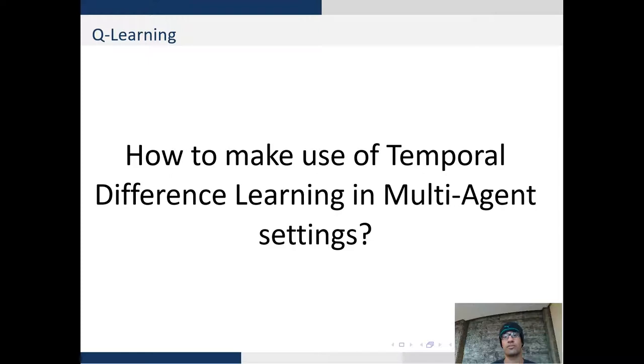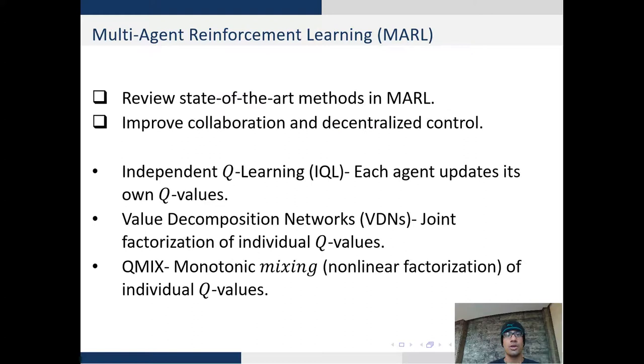So now that we have a setup, we begin to answer the question of how can we effectively use temporal difference learning and Q-learning in multi-agent settings. To answer these questions we review the state-of-the-art methods in multi-agent reinforcement learning to improve collaboration and decentralized control at test time. Specifically we look at three algorithms.